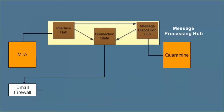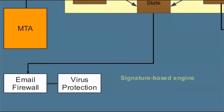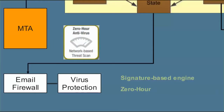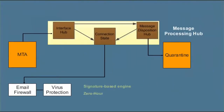The Virus Protection module uses an embedded signature-based antivirus engine to scan messages and attachments. To counter signature-busting attacks and unknown viruses, the Zero Hour option scans for virus-like patterns. Zero Hour protects from a virus infection during the first critical hours while a signature is developed.